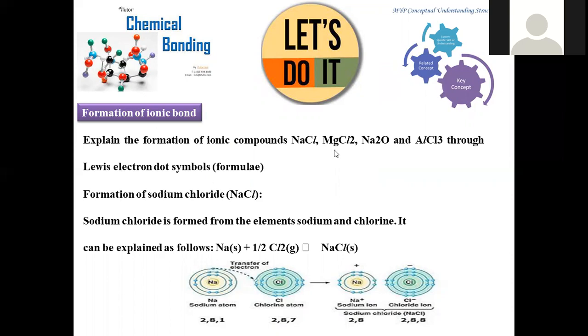The electron dot symbol is used to show transfer of electrons from metal to non-metal. The first example is sodium chloride (table salt), formed from sodium and chlorine. It can be explained as Na + 1/2 Cl₂ → NaCl because sodium is monovalent and we require only one chlorine, so we take the stoichiometric ratio as one-half.